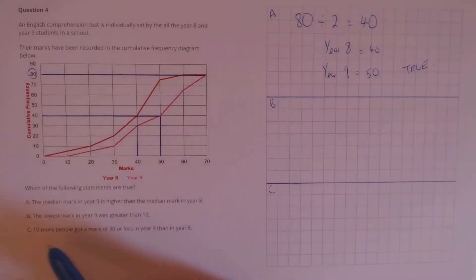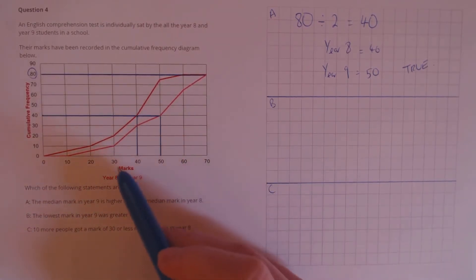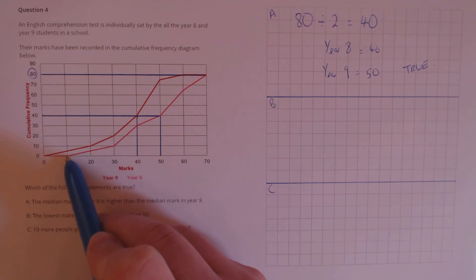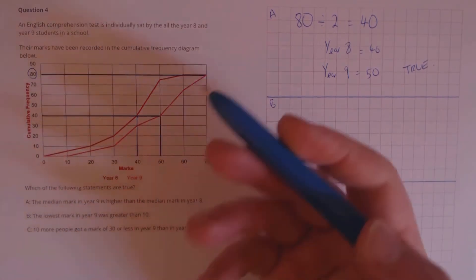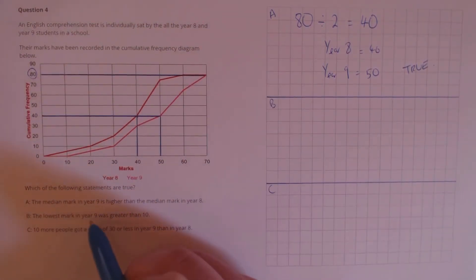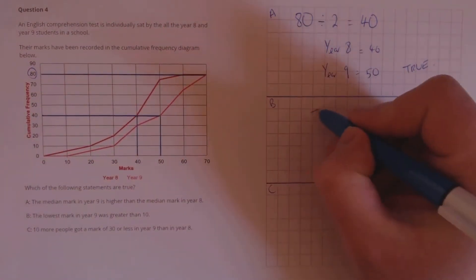B: the lowest mark in year 9 was greater than 10. If we look on the year 9 curve, nobody got a mark of 10, which means obviously that the lowest mark had to be greater than that. So true.